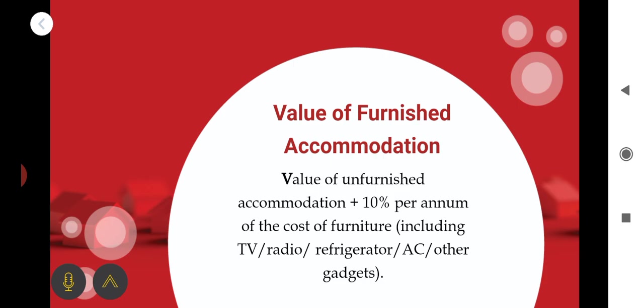That is the taxable portion — the value of furnished accommodation. The logic is very simple: if the problem involves a furnished house, we follow the procedure for calculating the value of unfurnished house and then add back 10% of the value of furniture. That total is the taxable portion — the value of furnished accommodation.